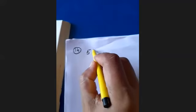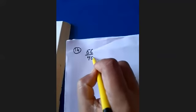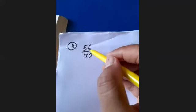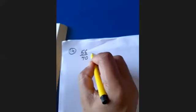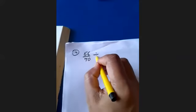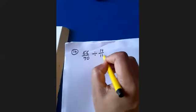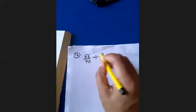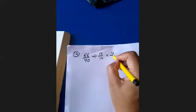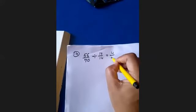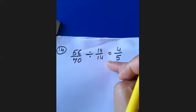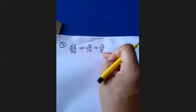Question 14: your fraction number is 56 upon 70. Both 56 and 70 are multiples of 14 — both numbers appear in the table of 14. Divide by 14: 14 times 4 is 56, so 56 divided by 14 is 4; 14 times 5 is 70, so 70 divided by 14 is 5. Your answer is 4 upon 5.